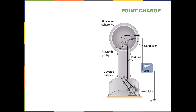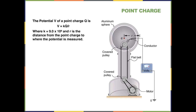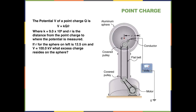Now let's talk about a point charge. The potential V of a point charge Q is equal to K times Q divided by R. The potential at any point from a charged particle equals K — which is 9 times 10 to the 9th — times Q divided by R, where R is the distance from the point charge to the place where the potential is measured. If R for the sphere is 12.5 centimeters and V is 100 kilovolts, what excess charge resides on the sphere?